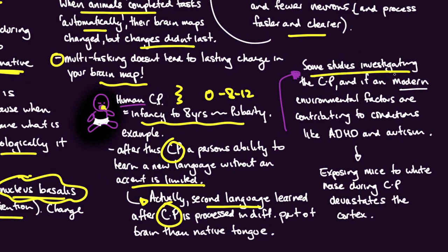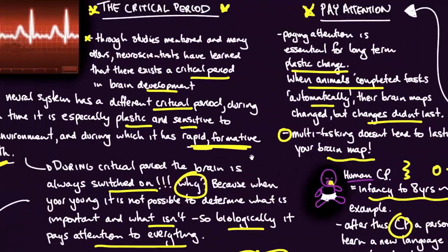Here's a point on the critical period. There is a suggestion now that modern environmental factors are contributing to conditions like ADHD and autism. How did they come to this conclusion? They exposed mice to white noise during their critical period, so when they're just born, they exposed them to white noise. What they found is that it actually devastates the cortex. If you can look at some correlation between what white noise is occurring in modern society - background noise from appliances, from traffic, from airplanes - there's some suggestion now that the incidence of these on the rise may be attributed to environmental factors like the white noise that we're experiencing through our critical period as we grow.